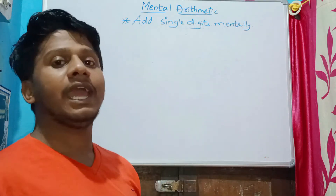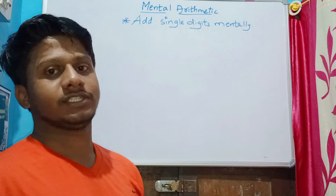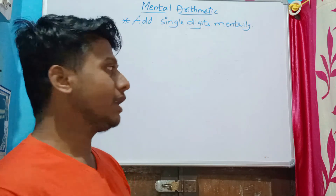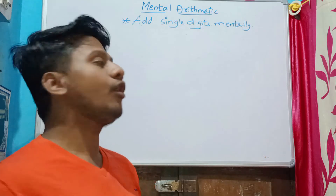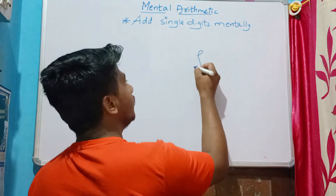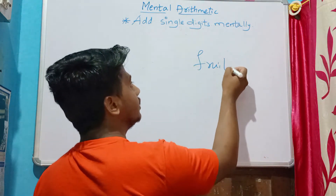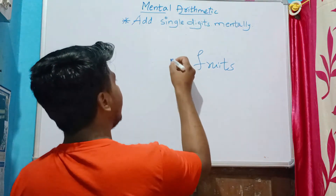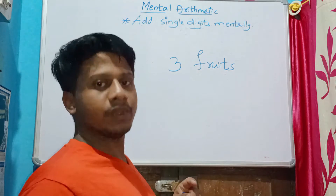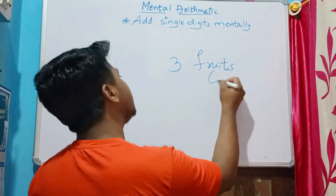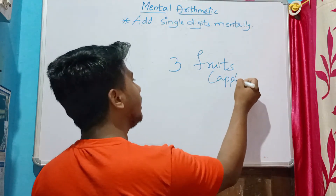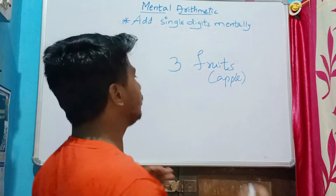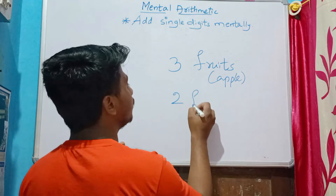So today we are going to think and add the digits. Starting with the first problem, consider an example of fruit — say you have three fruits with you, particularly apples. So consider you have three apples with you, and someone comes to you and gives you two more fruits.